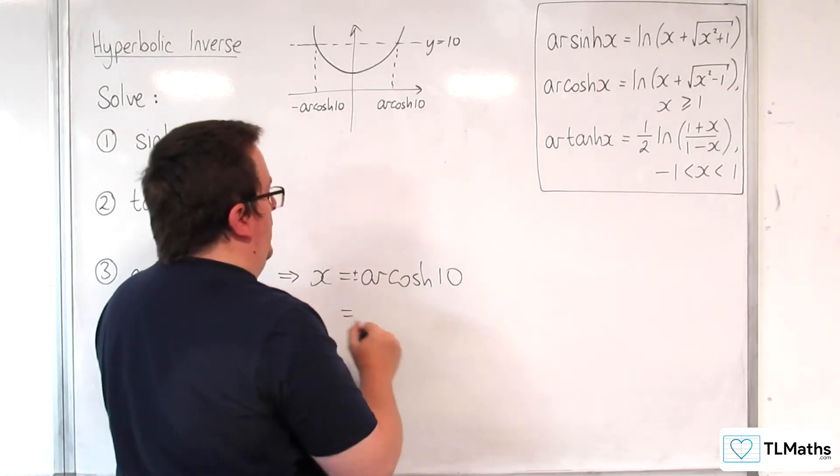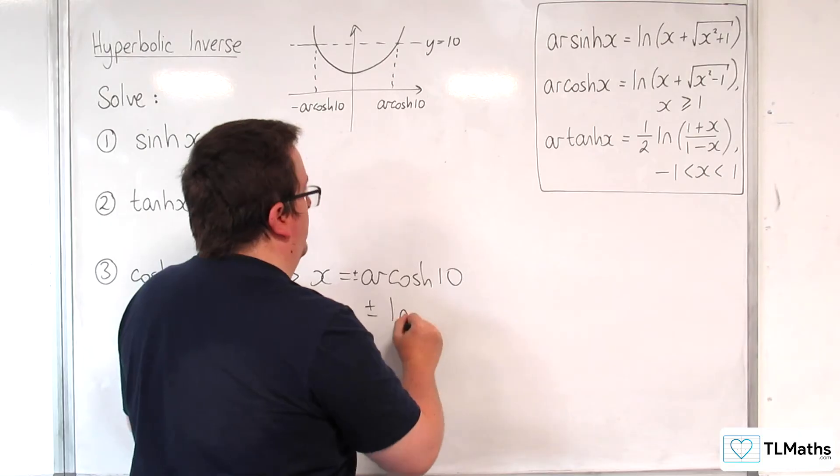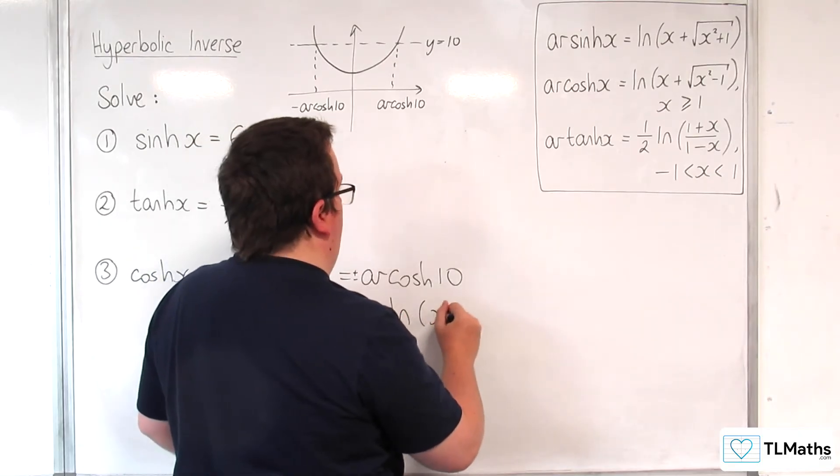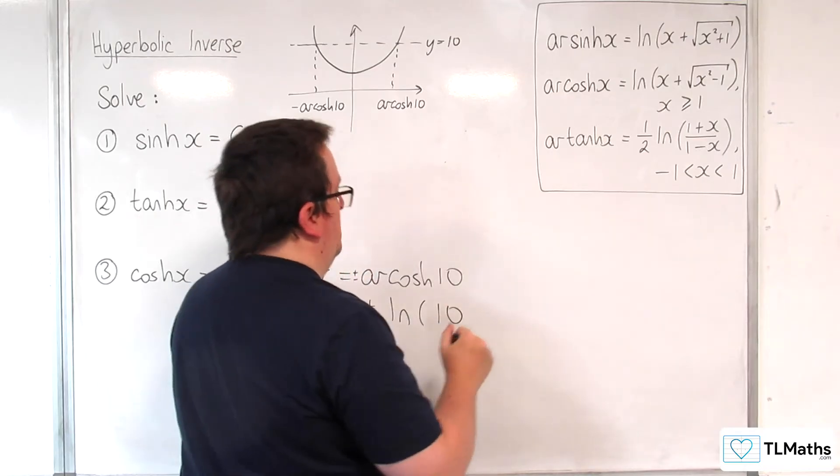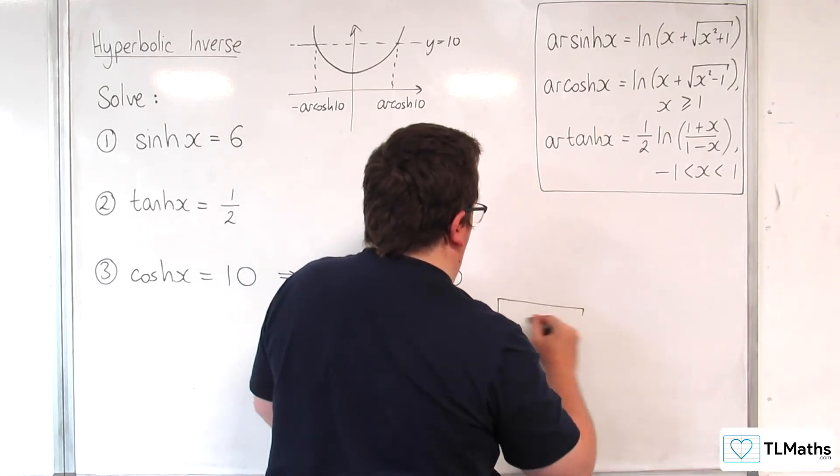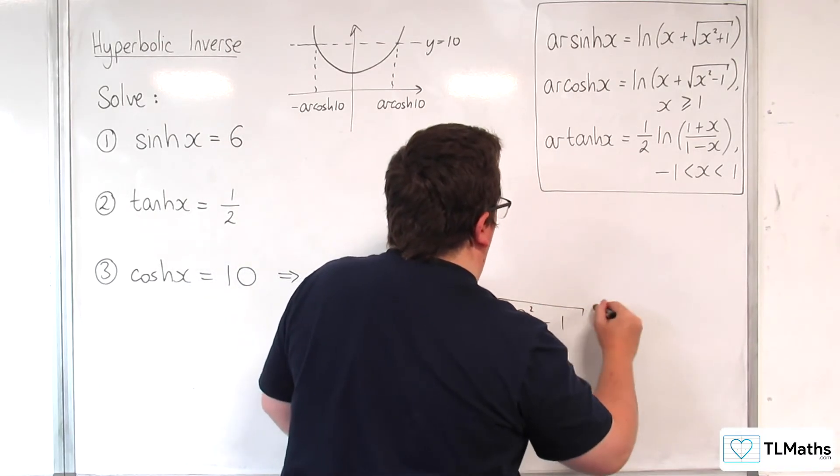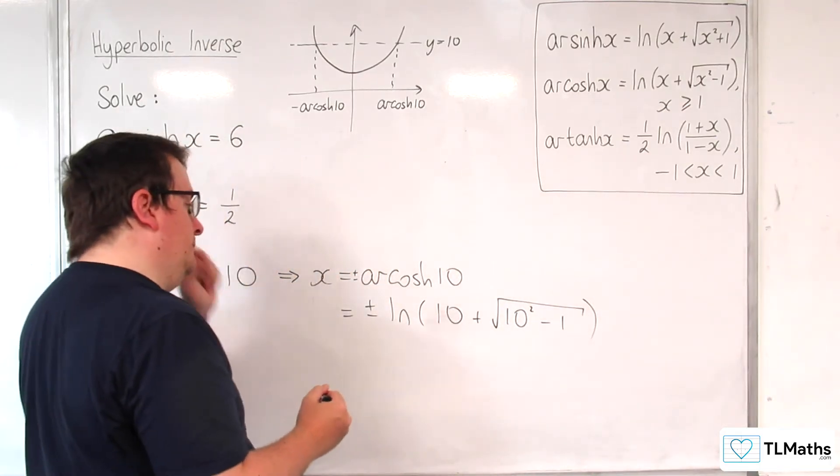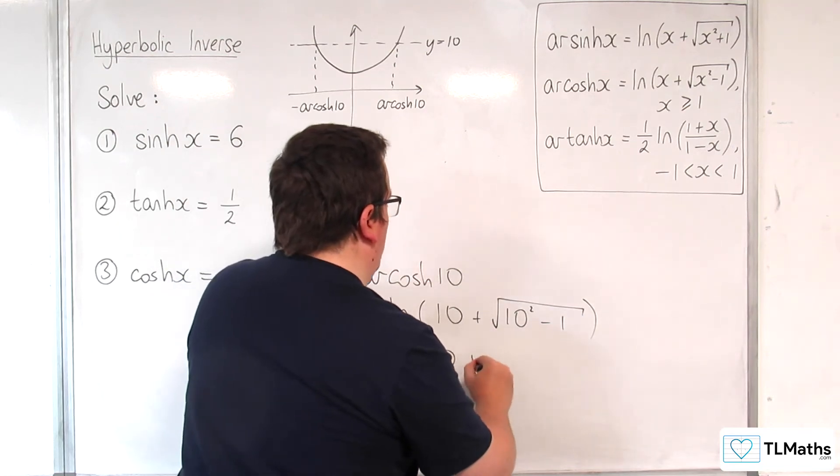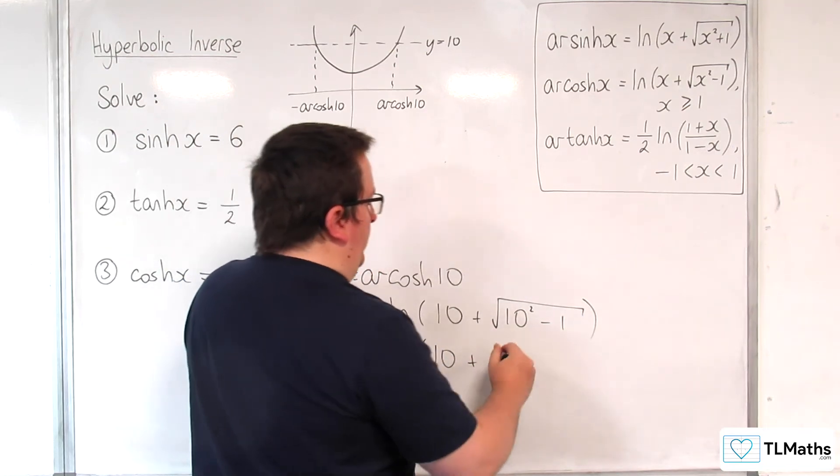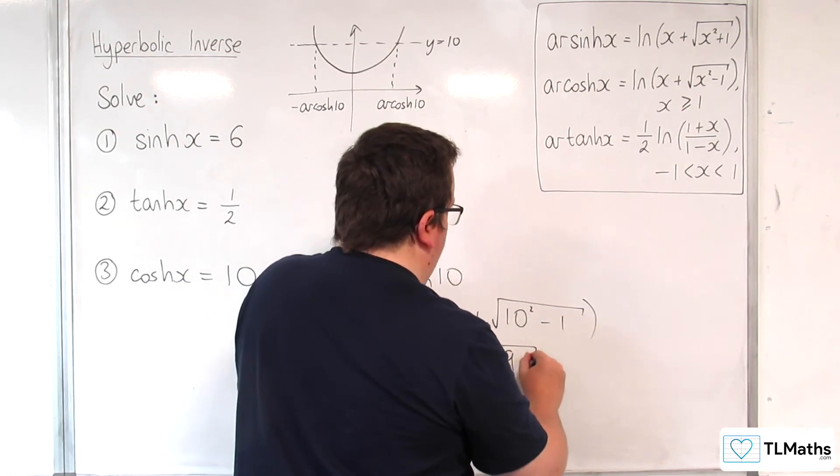So, this would be equal to plus or minus the natural log of 10 plus the square root of 10 squared take away 1. Which is plus or minus the natural log of 10 plus the square root of 99.